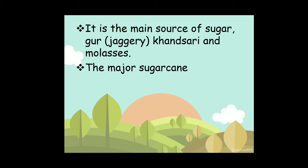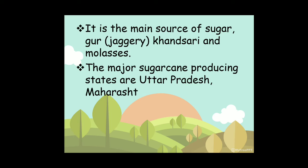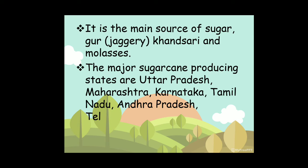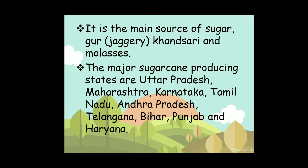The major sugarcane producing states are Uttar Pradesh, Maharashtra, Karnataka, Tamil Nadu, Andhra Pradesh, Telangana, Bihar, Punjab, and Haryana. This completes sugarcane — its climatic conditions, producing areas, and features.